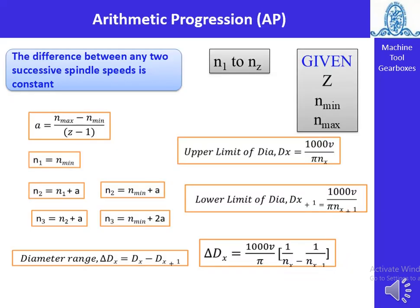The first one is arithmetic progression. In arithmetic progression, the difference between any two successive spindle speeds is constant. This constant difference is indicated by 'a', where a = (n_max − n_min) / (z − 1). So the difference between two successive spindle speeds is constant.